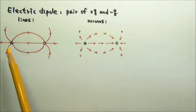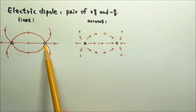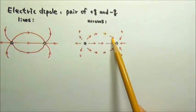The field lines come out of the positive charge and into the negative charge. So do the arrows.